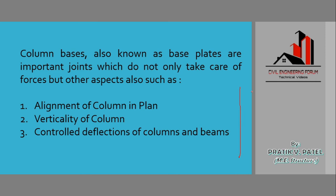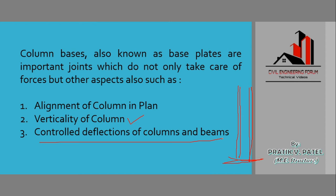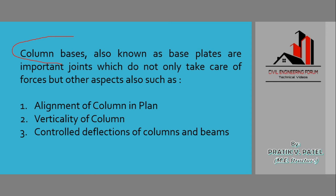Suppose I have made an I-section column. The use of this column base is also to make the column exactly vertical. Like in RCC structures, we can also check the verticality of the column by using a plumb bob. Our next point is control of deflection of the columns and beams — if we are using the column bases effectively and efficiently, then deflections of the columns and beams can be controlled to a very high degree.